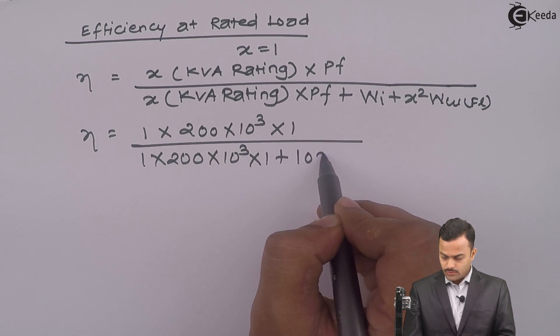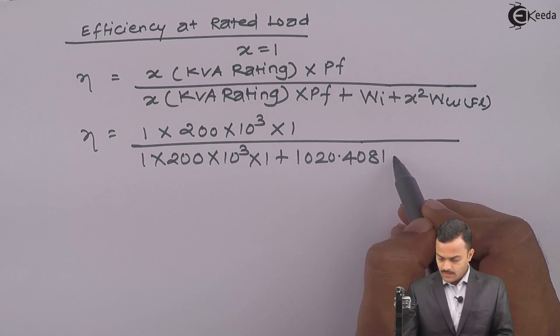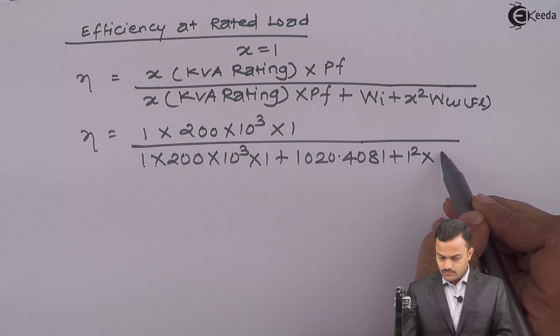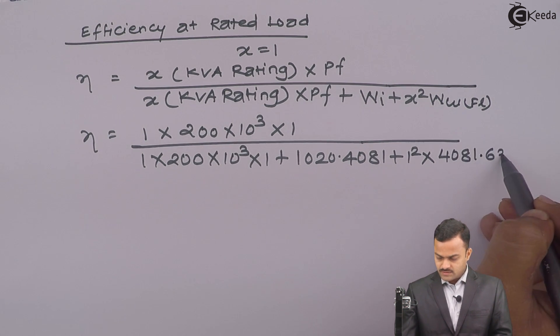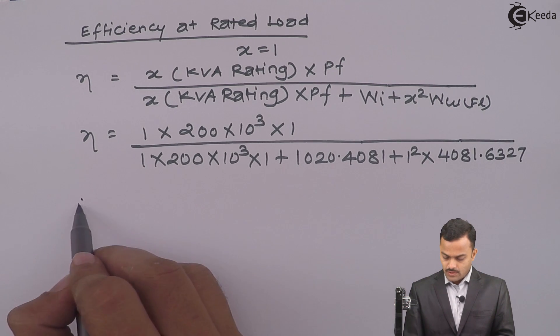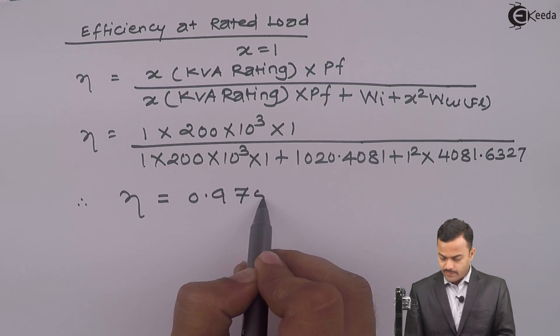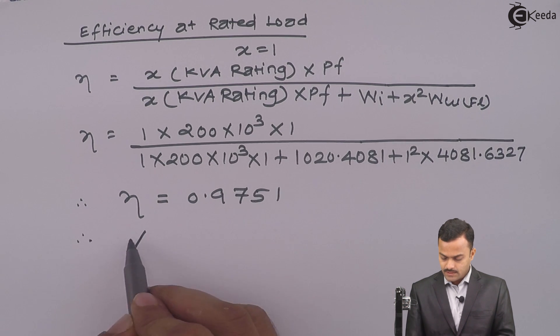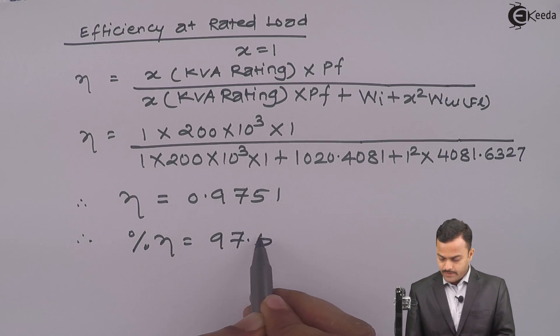So efficiency at rated load: X is 1, KVA is 200, power factor we assume as unity, ion loss we calculated 1020.4081, 1 square into 4081.6327. So if you solve this, you will get efficiency equal to 0.9751. In percentage, it is 97.51%.